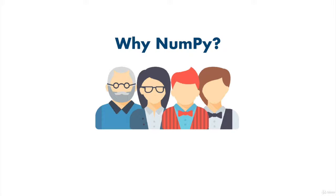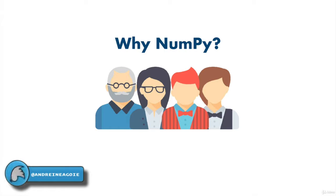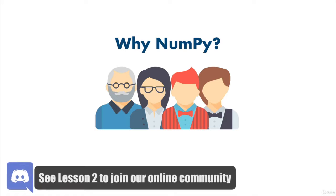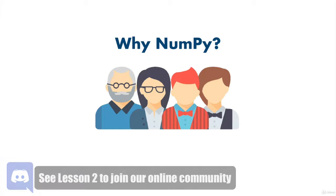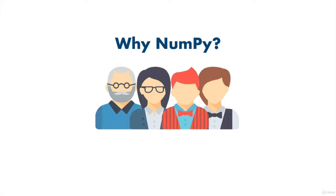Throughout this section we're going to explore the popular library called NumPy, which provides structures very similar to Python lists. It's one of the most used and popular libraries when it comes to data science and machine learning. But why do we need it? Don't we already have Python lists? Why is NumPy so popular and a must-use tool for machine learning?